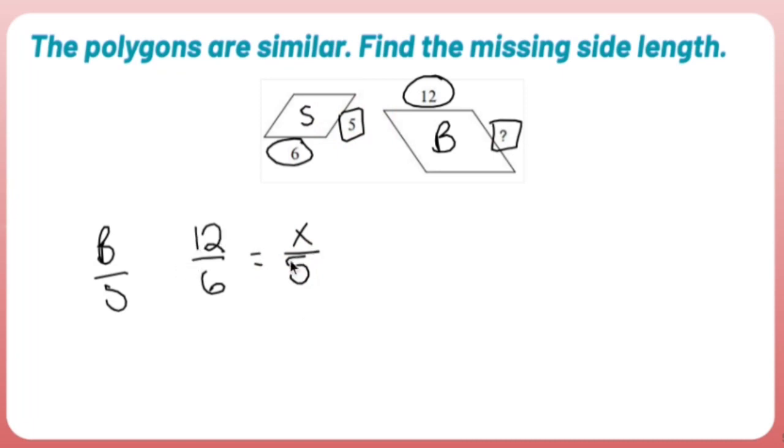Now what we have here is a proportion. A fraction equals a fraction. And the way you do a proportion is you find a diagonal and you multiply them. This is called crisscross applesauce.